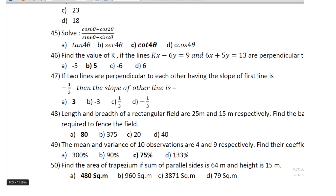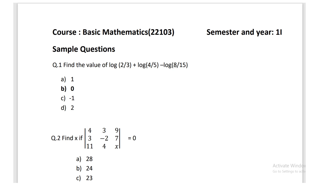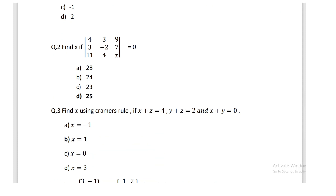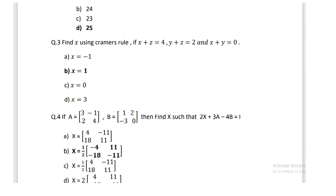The last area question gives 480 cm². Next: find the value of log(2/3) + log(4/5) − log(8/15); the answer is 0. Then find x given a matrix equation; the answer is 25.